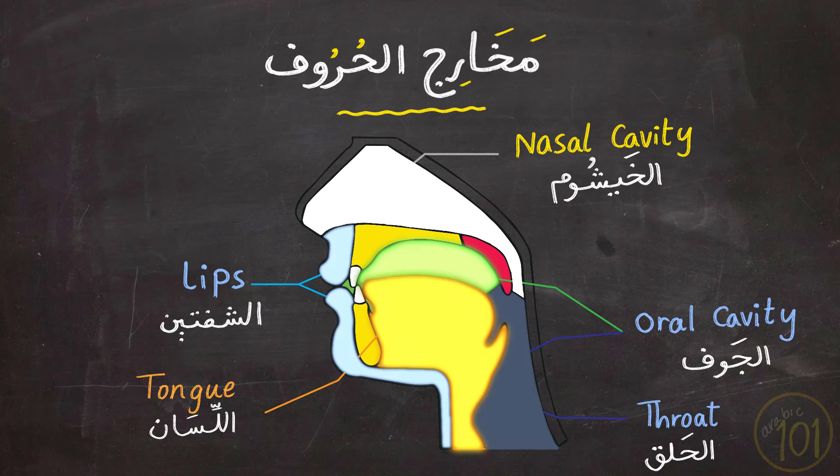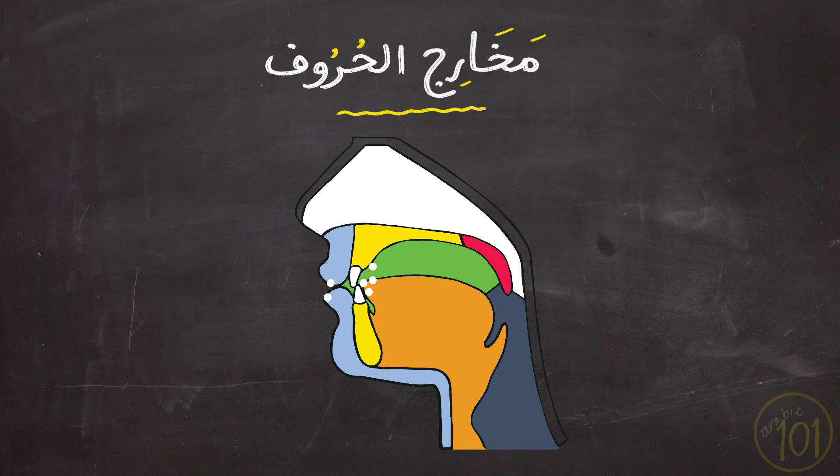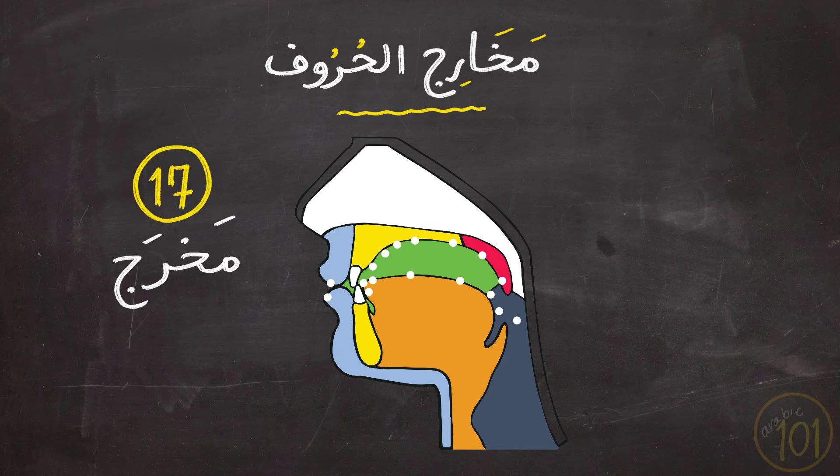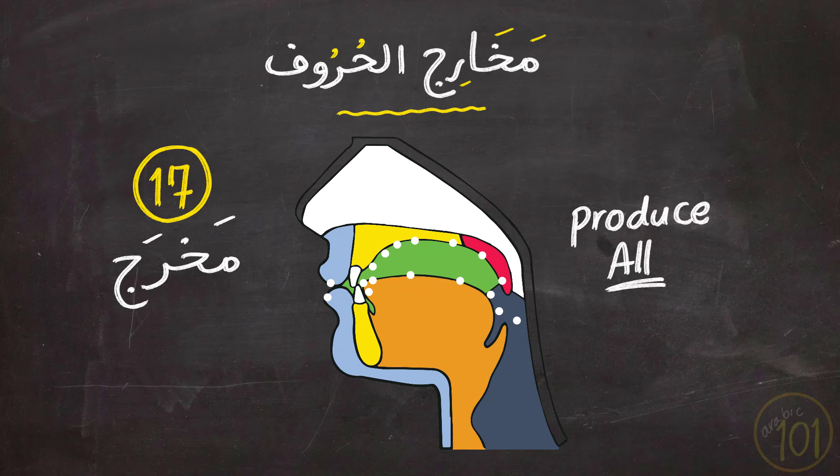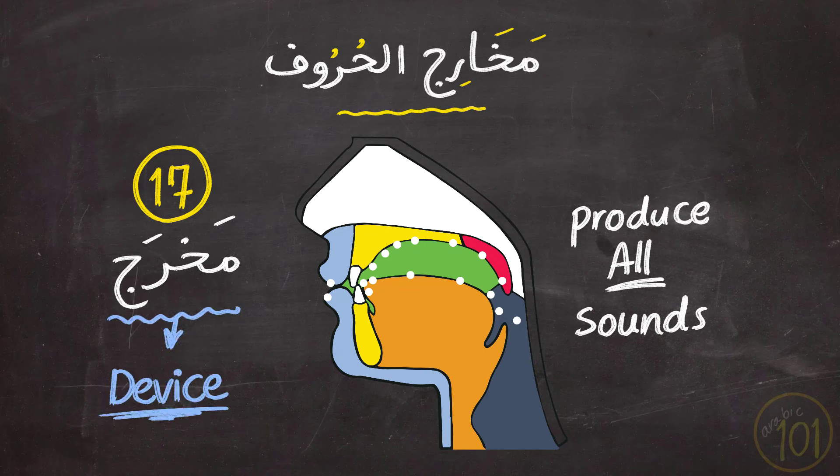Each of these five areas contains several points of articulation. Each of these articulation points is called makharaj. There are, in total, 17 makharaj, or 17 points of articulation. These 17 points produce all the sounds in Arabic. You can also call it 17 devices producing the sounds. Each one of these devices has a name and produces a number of sounds.